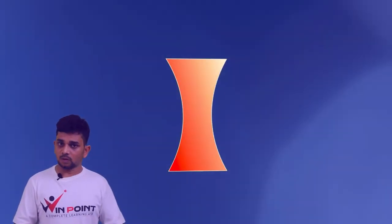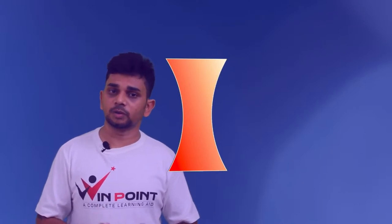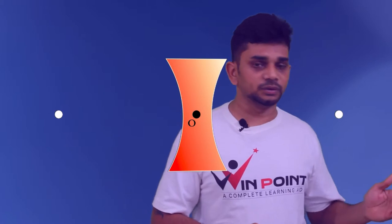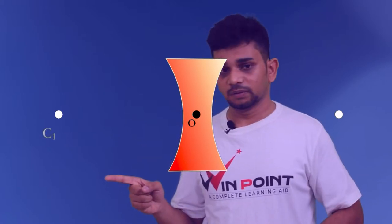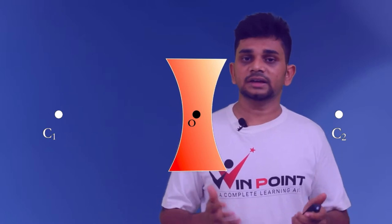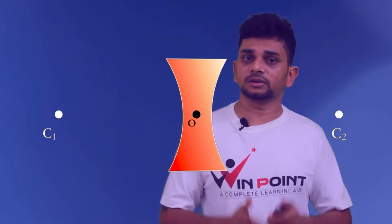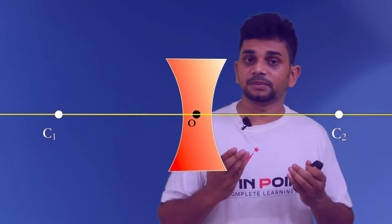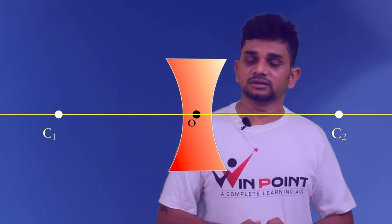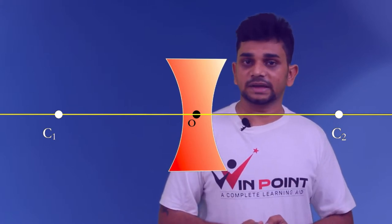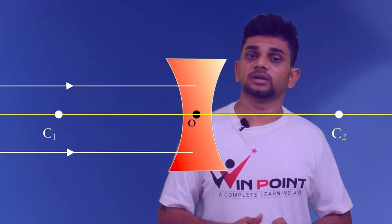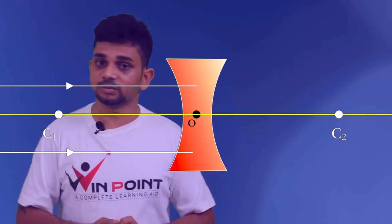Now we can discuss the same for a concave lens. What do you mean by the principal focus of a concave lens? This point is the optic center, represented by the letter O. There are two centers of curvature, C1 and C2. There is an imaginary line passing through the center of curvature, known as the principal axis. We are considering two light rays which are parallel to the principal axis.